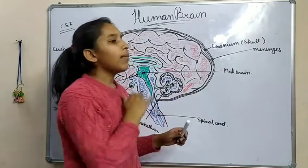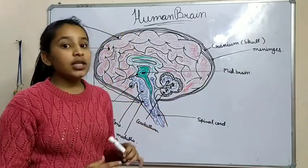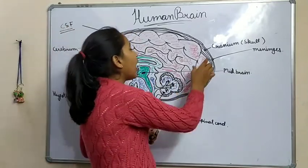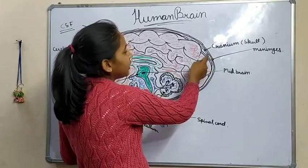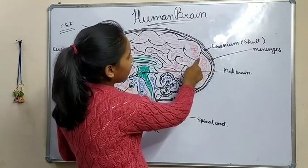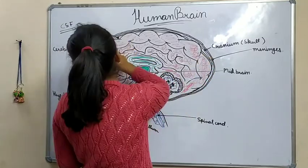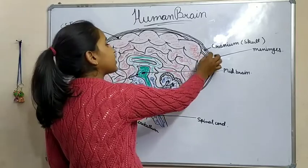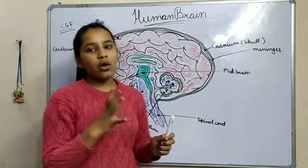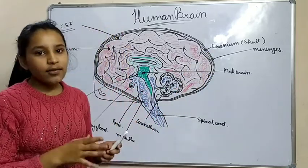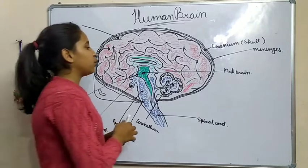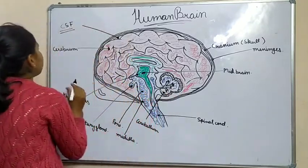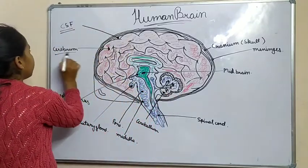The cranium has three layers which are called meninges. Inside these layers, between the cerebrum and skull, there is fluid called CSF, which I have already explained. Now first we will see the cerebrum.